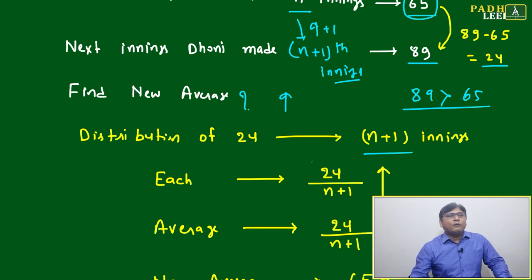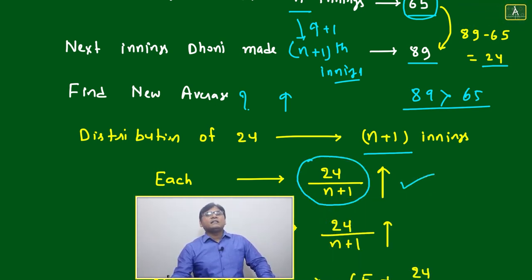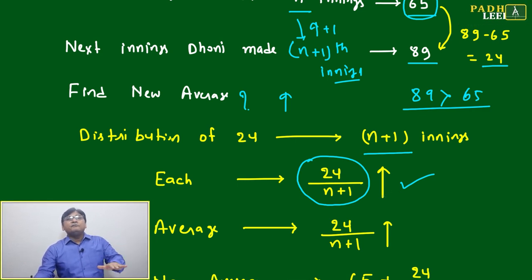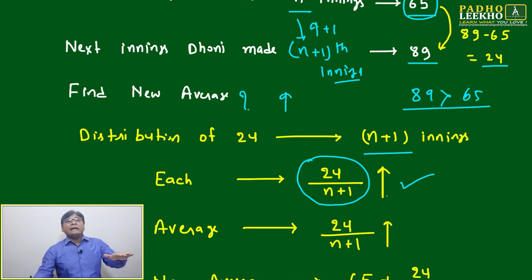What will be the distribution number? 24 divided by n+1. Each number will shoot up by that one, that much amount. Each number or each inning's score line will shoot up. Average will increase by the same number. Earlier average was this one, now all numbers have increased by 24/(n+1), average also will shoot up by 24/(n+1).